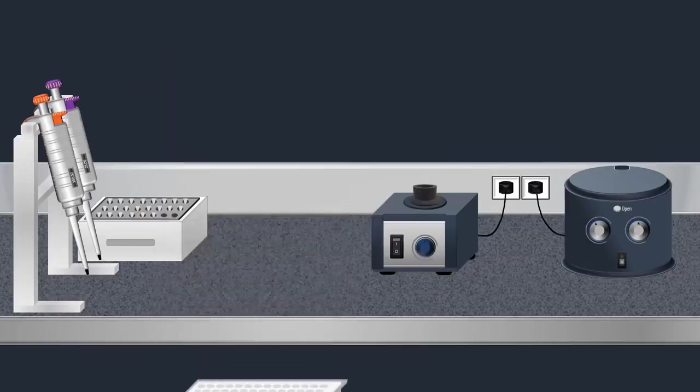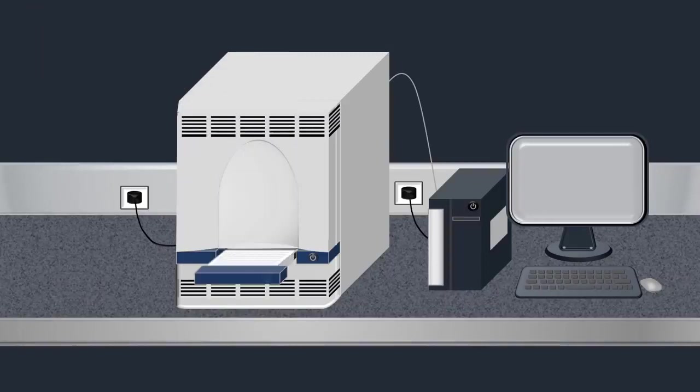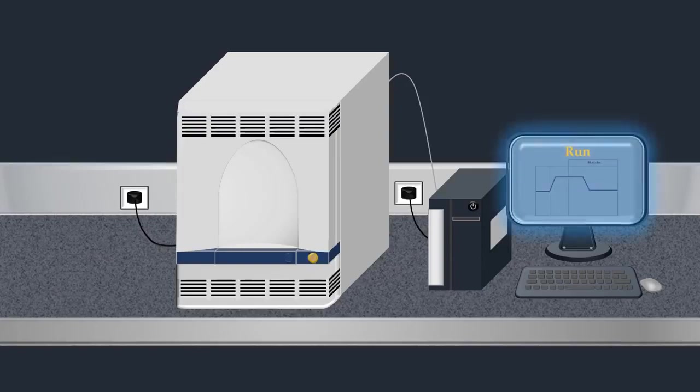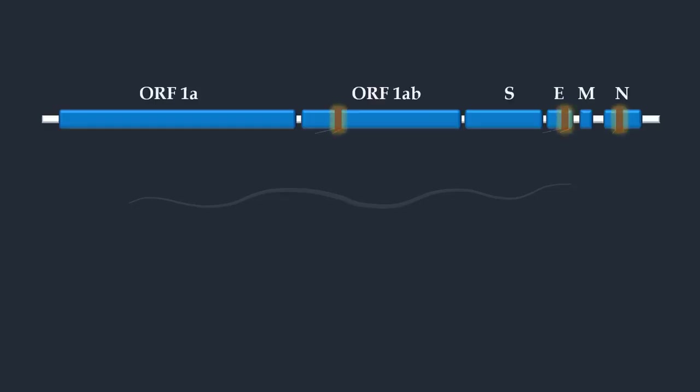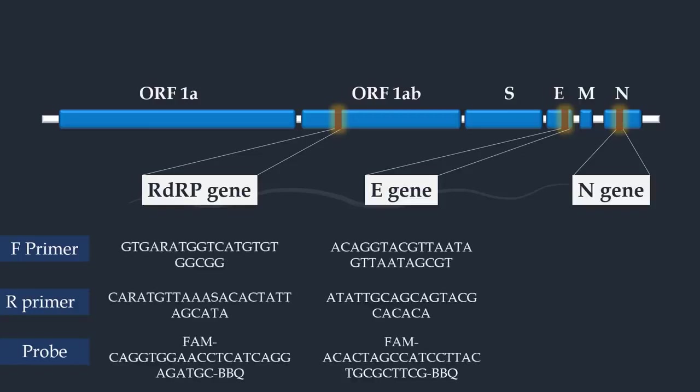Next, the plate is placed in a PCR machine, which is essentially a thermal cycler. Real-time RT-PCR is used for the detection of the coronavirus 2019 by the amplification of target sequences in the RdRp gene, the E gene, and the N gene. The choice of the target gene depends on the primers and the probe sequences.